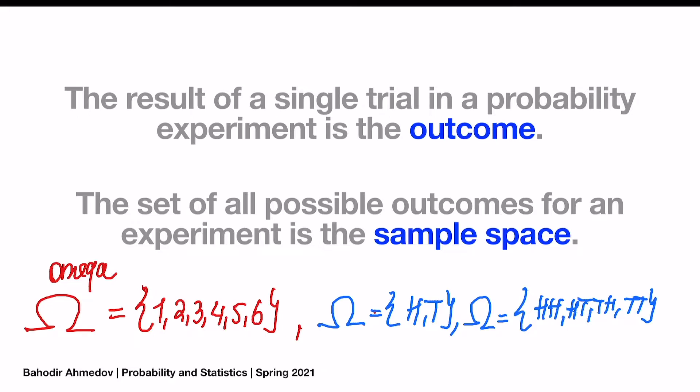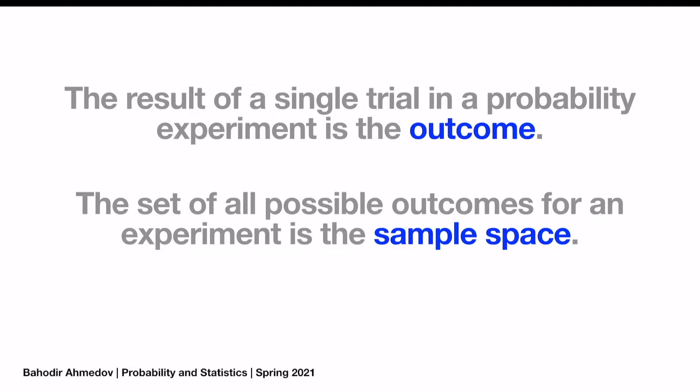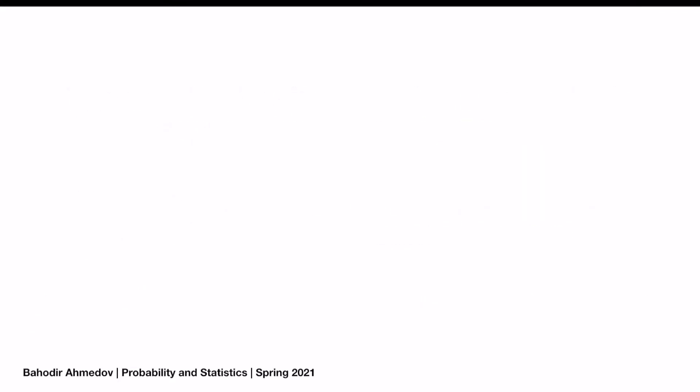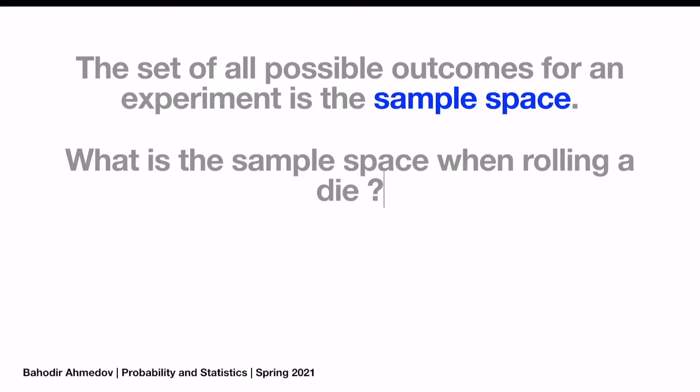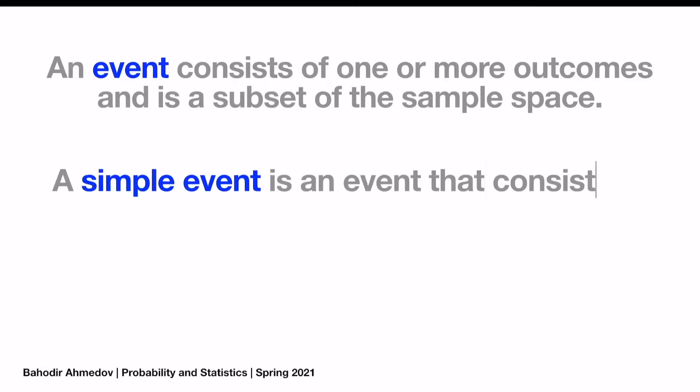It's going to be: heads-heads, heads-tails, tails-heads, tails-tails. The sample space contains all of the possible outcomes of your probability experiment. The set of all possible outcomes is the sample space. For rolling a die, omega equals the numbers from 1 to 6.